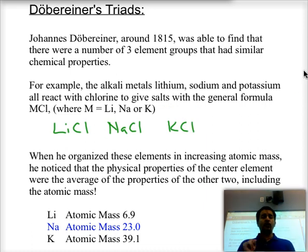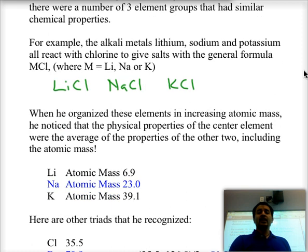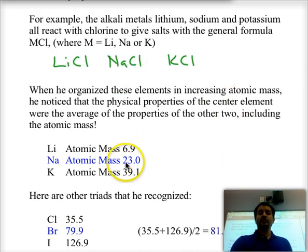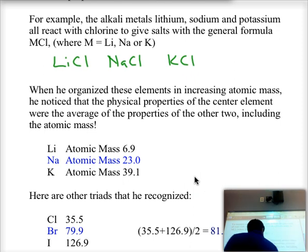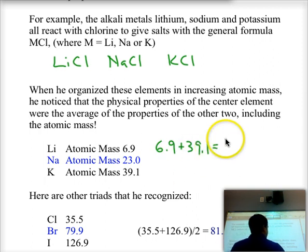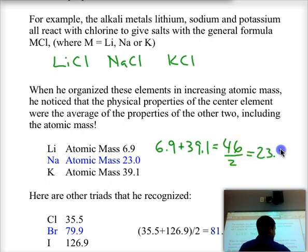What he noticed is that when he organized lithium, sodium, and potassium based on their atomic mass, he noticed that the two extremes, lithium and potassium, when added together and averaged would give you the atomic mass of the middle one. If we notice that, 6.9 plus 39.1 added together gives you 46. We average that by dividing by 2, and it's 23, which happens to be exactly the mass of the middle member of the triad.